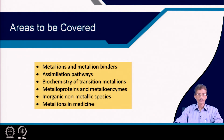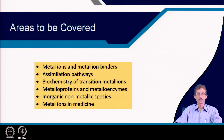We will also look at assimilation pathways — that means how metal ions are involved in the biological environment, where we can get these metal ions from many sources like food material. How they can be incorporated into heme proteins like hemoglobin and myoglobin — meaning the iron insertion reaction — can be considered as typical assimilation pathways.